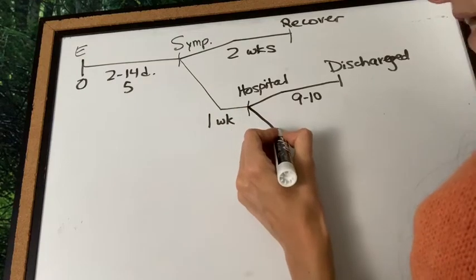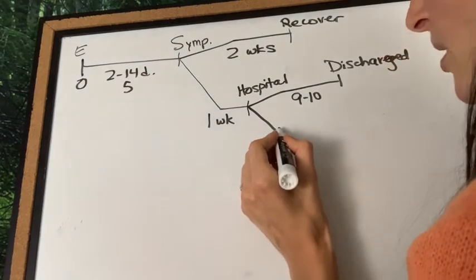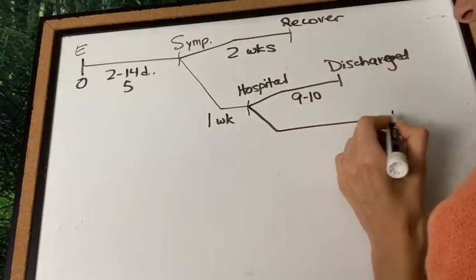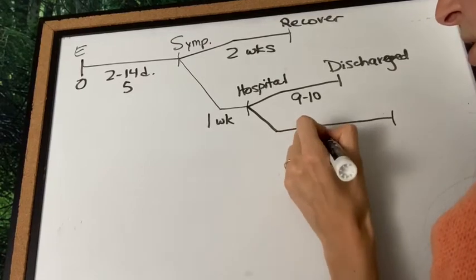Unfortunately, about one of five people who go in the hospital die from the virus. People who die, actually, they tend to be in the hospital a little longer. They tend to be there for up to about two weeks.